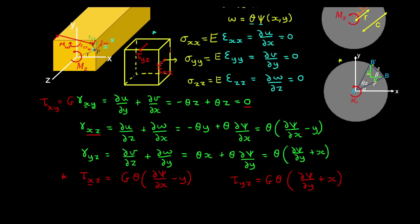Note that we will have complementary shear stresses on the adjacent faces. For tau_XZ, there is a complementary shear stress on the Z-face acting in the X direction, equal in magnitude. Similarly, there is a complementary shear stress on the Z-face acting in the vertical direction, complementary to tau_YZ. From now on, we will use these two shear stresses acting on the Z-face to better visualise the torsion problem for non-circular open sections.